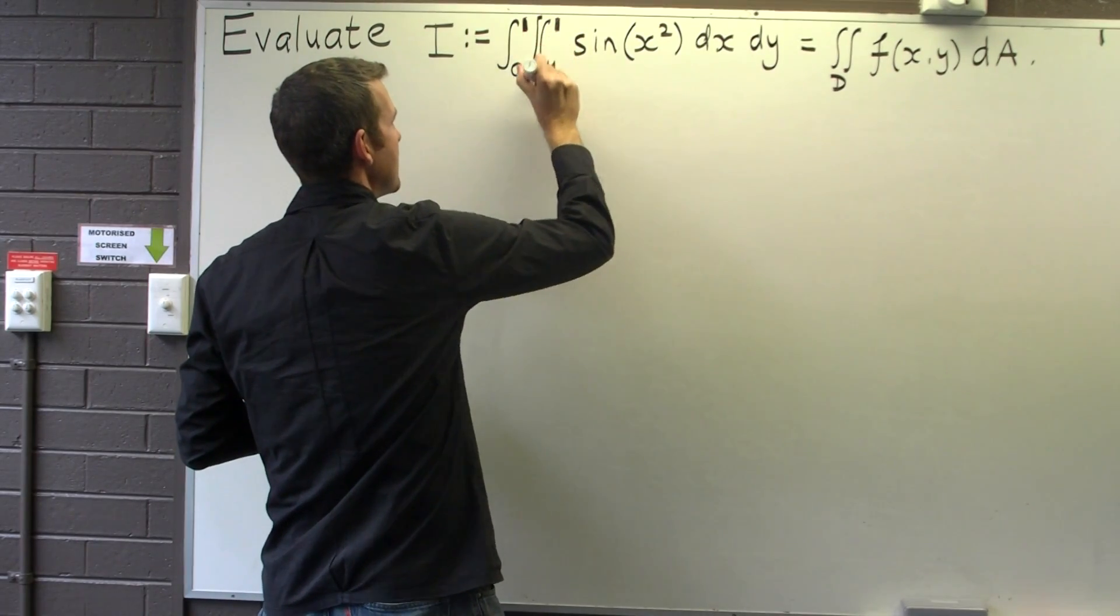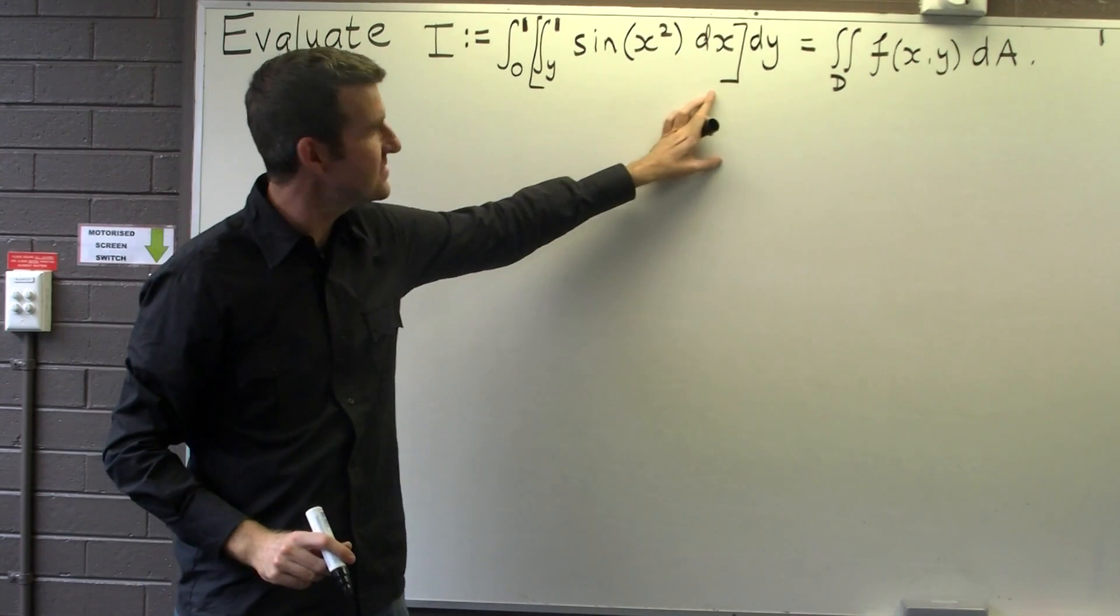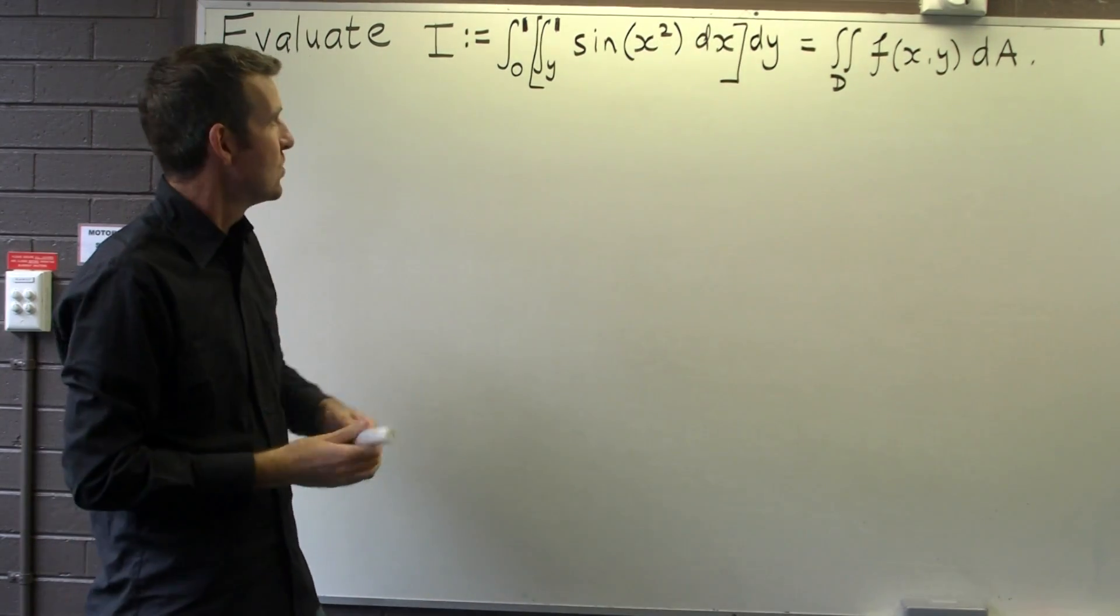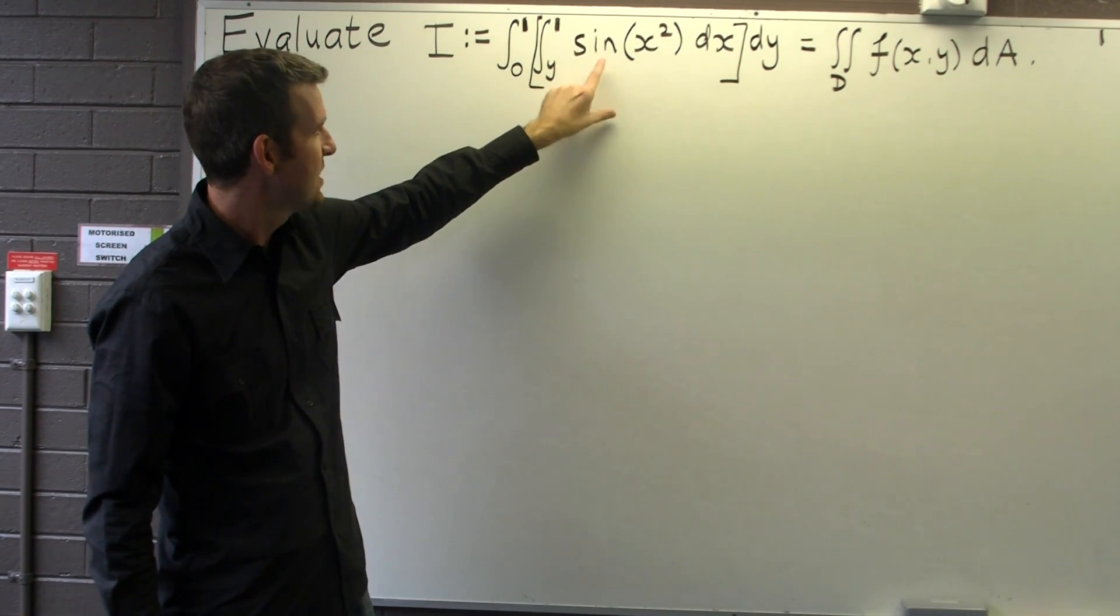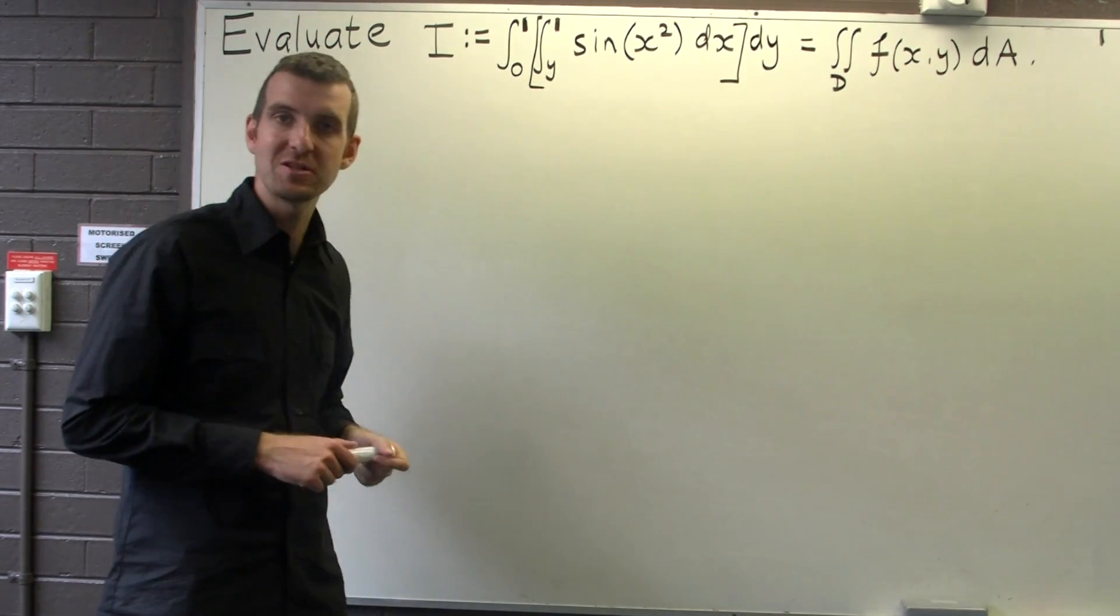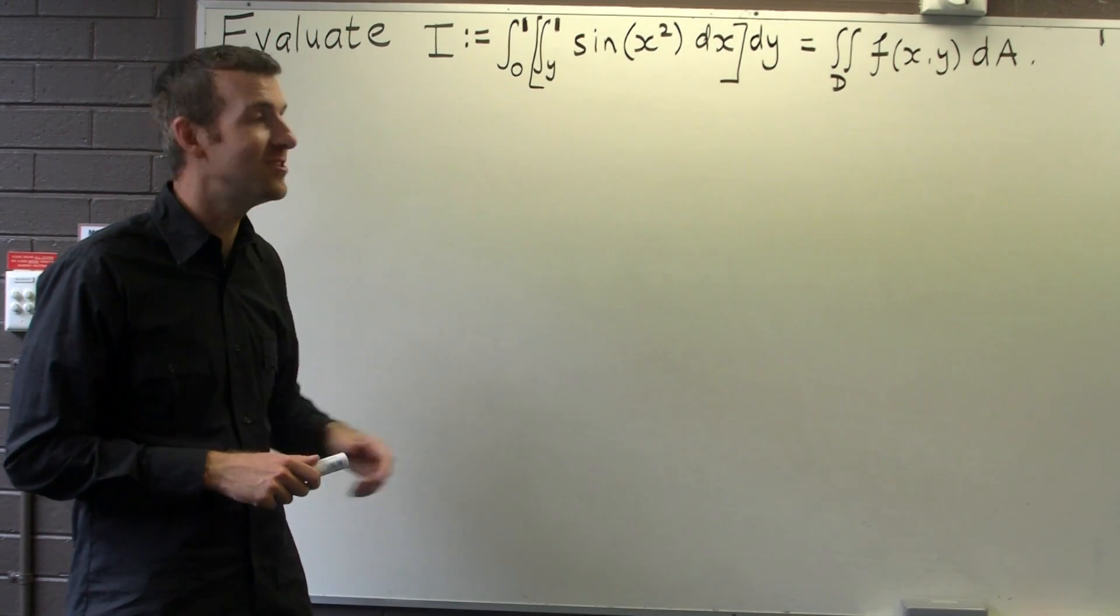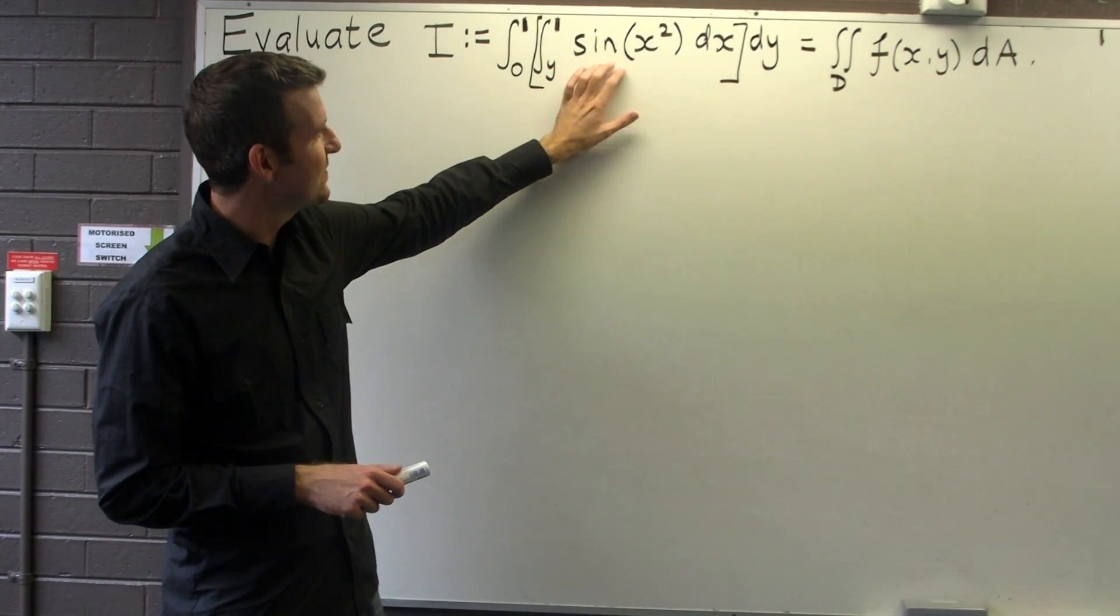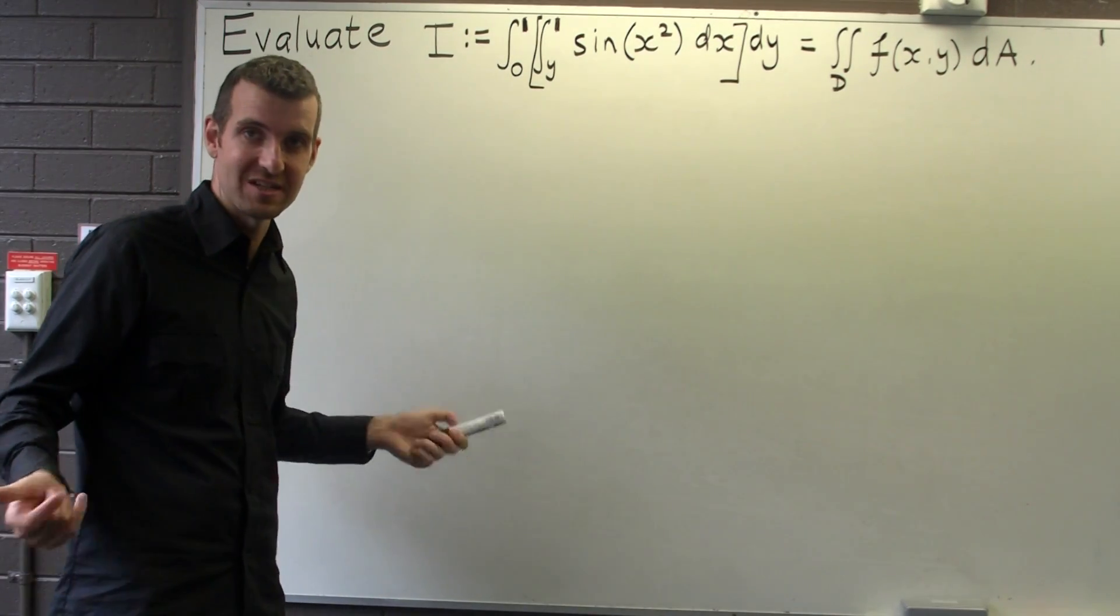If we just consider the inside integration, well, we're trying to find, first off, the antiderivative of sine of x squared with respect to x. Now, that's very difficult. In fact, we cannot find the antiderivative of sine of x squared with respect to x in terms of elementary functions.